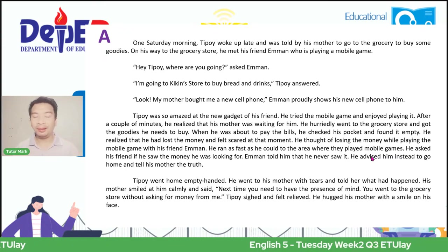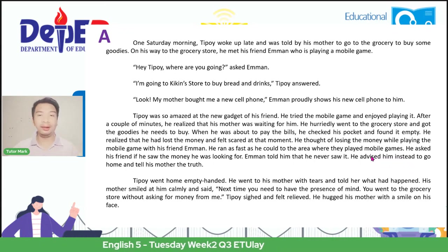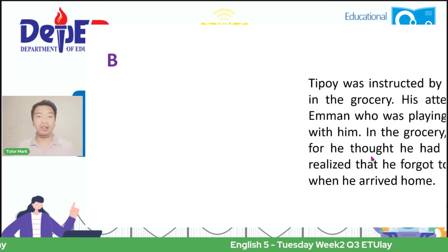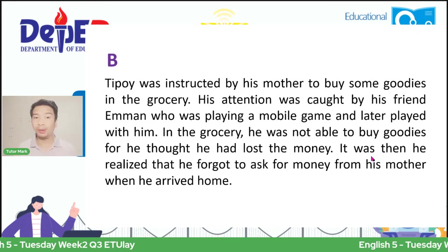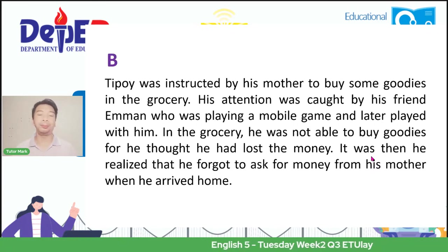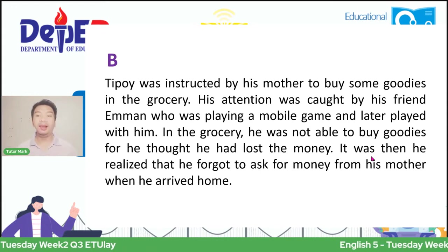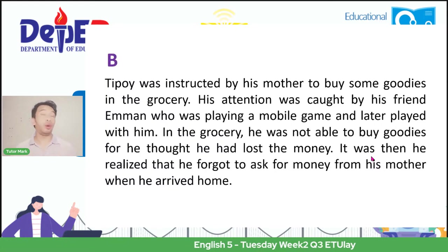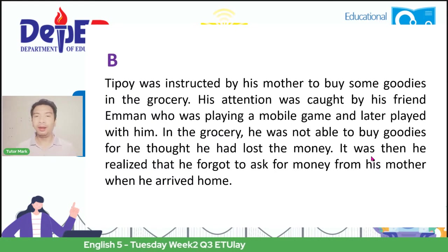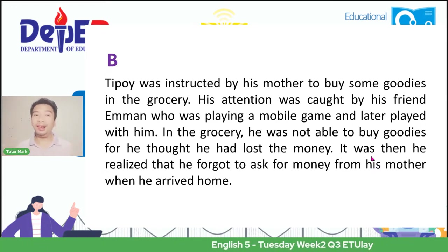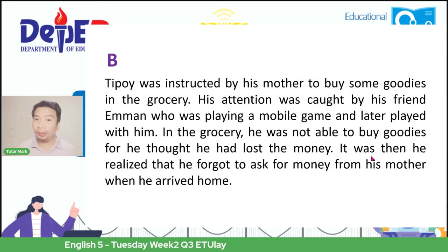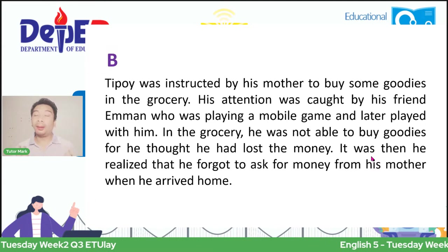Look at this next text. It is almost the same as Letter A—this is Letter B. I'll read it for you. 'Tipoy was instructed by his mother to buy some goodies in the grocery. His attention was caught by his friend Eman, who was playing a mobile game and later played with him. In the grocery, he was not able to buy goodies for he thought he had lost the money. It was then he realized that he forgot to ask for money from his mother when he arrived home.' Isn't the story the same? Yes. They are the same story—but in Letter B, it is shorter. Yet the meaning is the same.